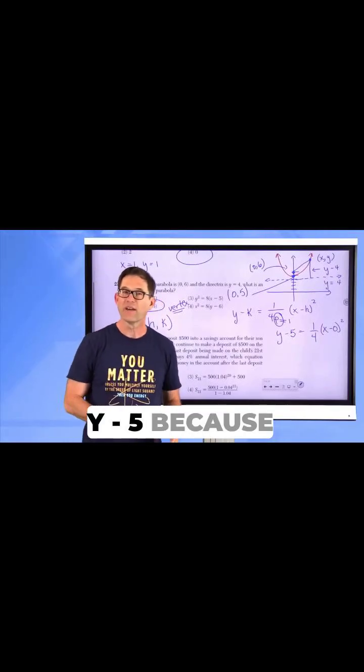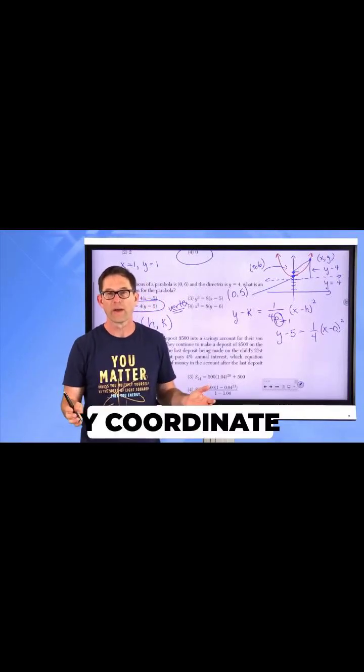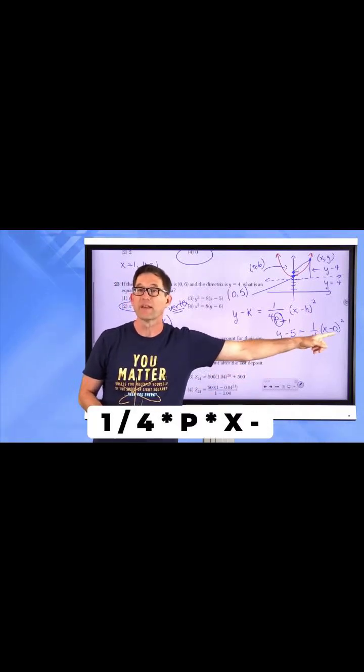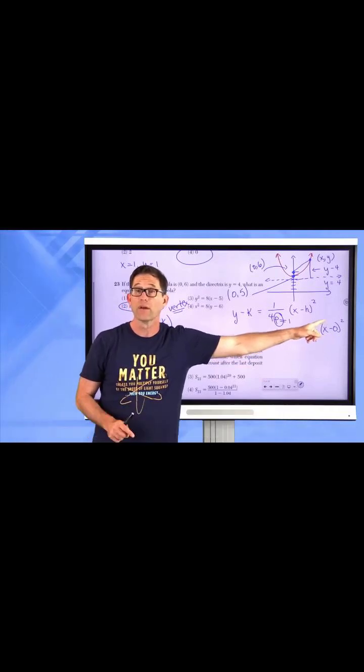Y minus 5, because 5 is the vertex Y coordinate, equals 1 fourth, 1 over 4 times P, times X minus 0, also the X coordinate of the vertex squared.